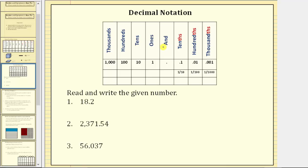To the right of the decimal point, we have the tenths, hundredths, and thousandths place value. Let's also review some rules for writing numbers.